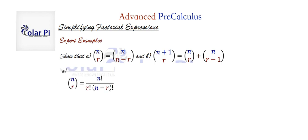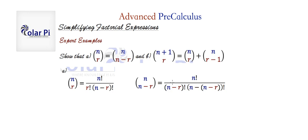Let's start with A. n choose r by definition is equal to n factorial divided by r factorial times n minus r factorial. Using this definition, n choose n minus r will look like this: all we do is replace r with n minus r in this expression, replacing each r with n minus r, and be careful to put the n minus r in parentheses.